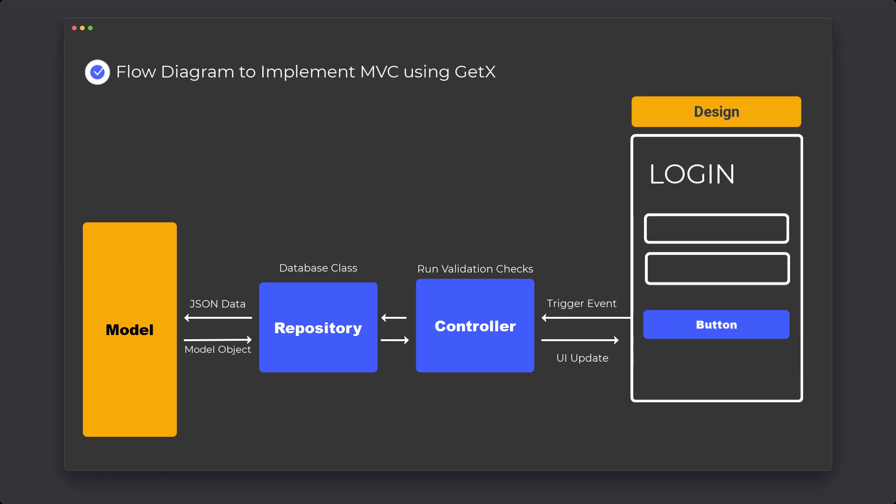We learned how to fetch different types of categories from our Firebase database — how to get data triggered from the design, pass it to the controller, then to the repository to fetch cloud data, convert that data into a model (JSON), map it to a category model, return the list of categories back to the controller, and display the data inside our data tables.